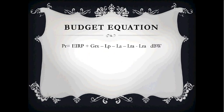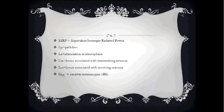Now I will brief you about the link budget equations. The first equation calculates receiver power: Er = EIRP + GRX − LP − LA − LTA − LRA, where EIRP is the effective isotropic radiated power, LP is the path loss, LA is the atmospheric attenuation, LTA is losses associated with the transmitting antenna, LRA is losses associated with the receiving antenna, and GRX is the receiver antenna gain.